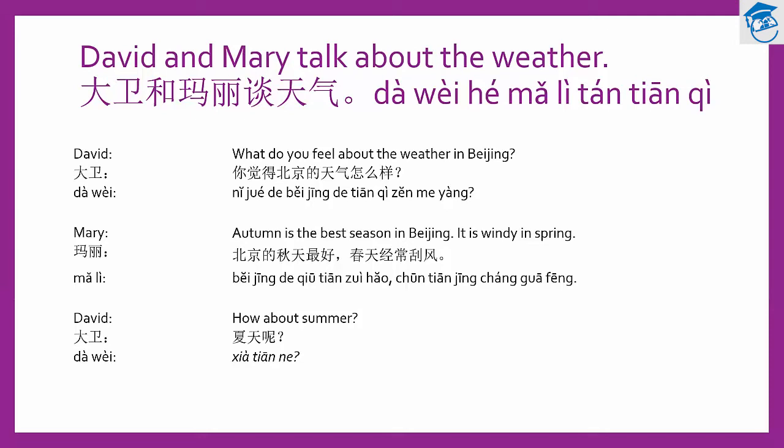大卫问：你觉得北京的天气怎么样？ Mary answers: Autumn is the best season in Beijing, and it is windy in spring. 玛丽说：北京的秋天最好，春天经常刮风。 David asks again: How about summer? 大卫在问：夏天呢？